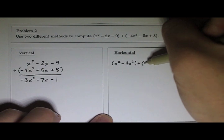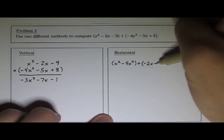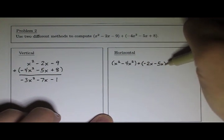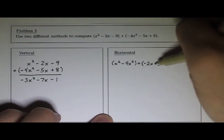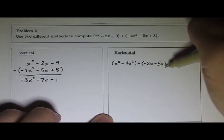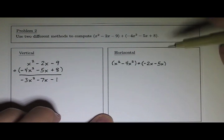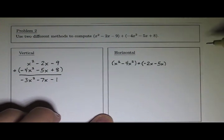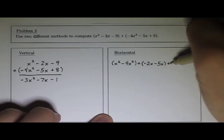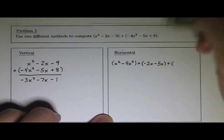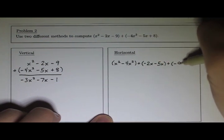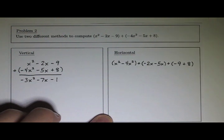I have a negative 2x and a negative 5x. Again, you could put parentheses around this and make it plus negative 5x. It doesn't matter. I'm just going to write it this way to save space. Then plus the last terms: we have a negative 9 and a positive 8. Negative 9 plus 8.